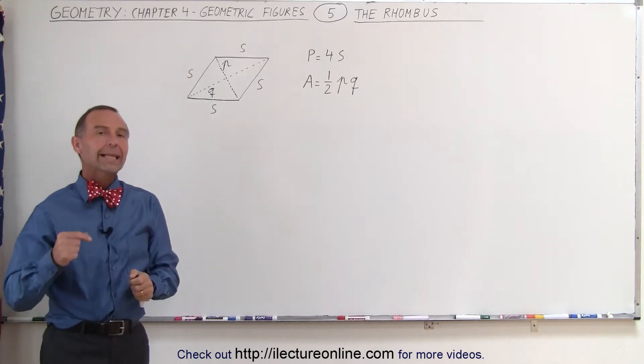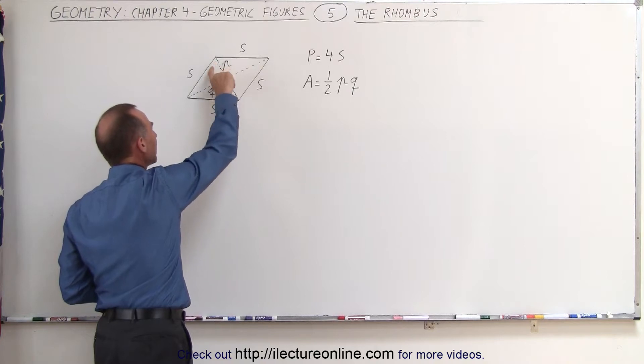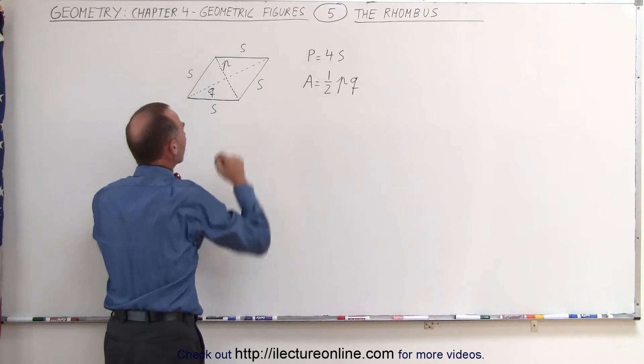If we then draw the diagonals from this corner to that corner, let's call that diagonal P, and the other diagonal Q. Notice that this is a shorter diagonal and this is a longer diagonal.